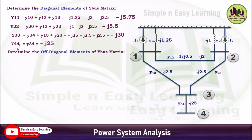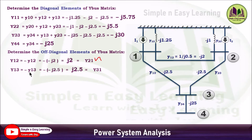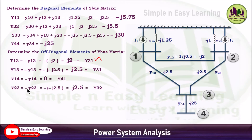The off-diagonal elements are the negative of the admittances connected between two buses. Y12 equals negative of the admittance between buses 1 and 2: -(-j2) = j2, and Y12 = Y21. Similarly, Y13 = -(-j2.5) = j2.5, which equals Y31. Y14 equals zero because there is no line connected between buses 1 and 4, and Y41 = 0 as well.